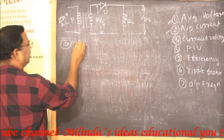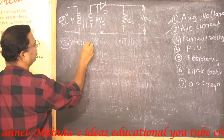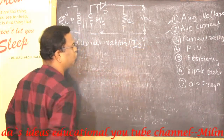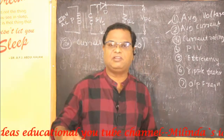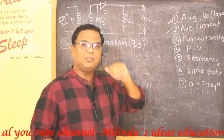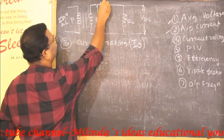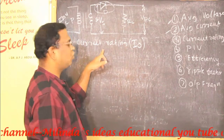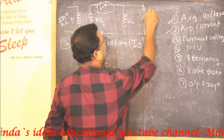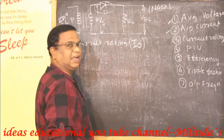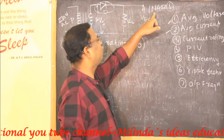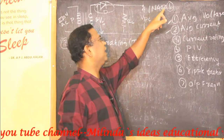The third parameter is current rating, given by IO. Rating means the maximum value — maximum current. Current rating means the maximum current that a diode can handle. For example, if we are using a 1N4001 diode, the part number indicates its current handling capacity. The current rating tells us the maximum current that diode can safely handle.